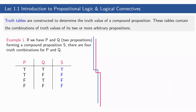Example 1: if we have P and Q — two propositions forming a compound proposition S — there are four truth combinations for P and Q. For P we have: true, true, false, false; and for Q: true, false, true, false. We have a unique combination for each truth value. For S, let's take this as an unknown compound proposition. If we have three propositions, we have eight truth combinations — all unique.